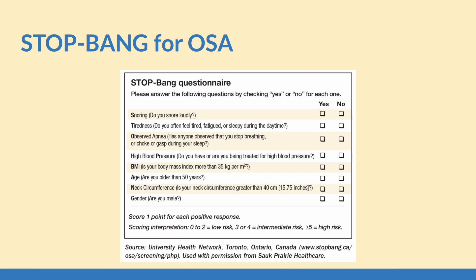And so if you suspect OSA in someone, we would go through the screening tool with them to determine if they're at a low, intermediate, or high risk. And then you'd be able to make your recommendations from there.